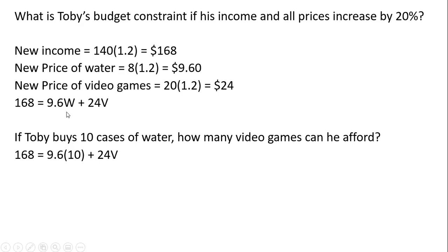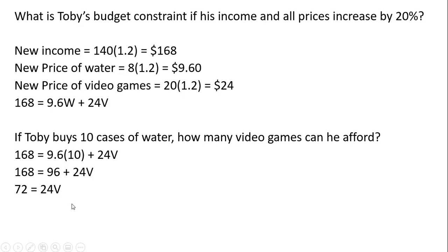Income equals the price of water times cases of water, plus the price of video games times the number of video games. If Toby buys 10 cases of water, how many video games can he afford? Just plug 10 into the budget constraint for water and solve for V. 168 minus 96 is 72, and then dividing through by 24: 72 divided by 24 is 3.